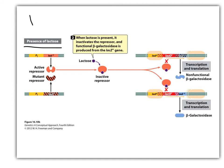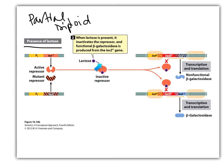Another example: in a partial diploid with lactose present, the mutant repressor does nothing — it can't interact with lactose and can't bind. The functional repressor interacts with allolactose and can no longer bind the operator either. So RNA polymerase binds just fine and we get transcription and expression. Even if there's a mutation in lac z on one chromosome, as long as the other copy is functional, we get a good product.